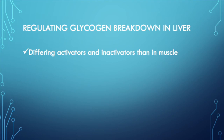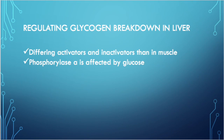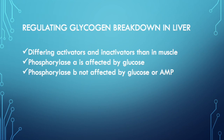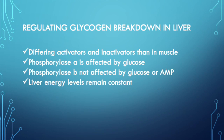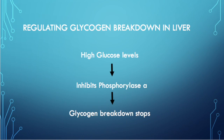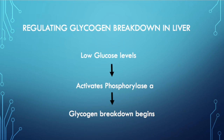In the liver, phosphorylase A and B are similarly present but differ in their activators and inactivators. Phosphorylase A is affected by glucose, whereas phosphorylase B is insensitive to AMP molecules due to the regulated energy levels in the liver. When glucose levels are too high, glucose binds to and inhibits phosphorylase A, preventing glycogen breakdown. When glucose levels are too low, glucose leaves phosphorylase A, resulting in its activation and initiating glycogen chain breakdown.